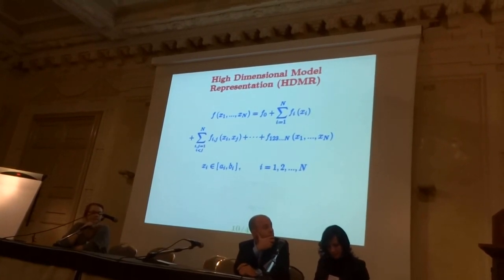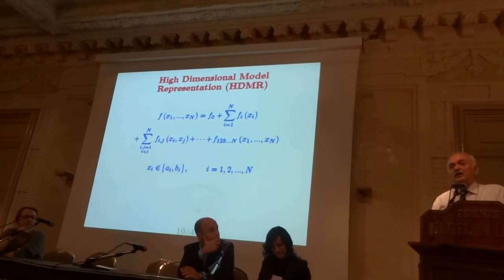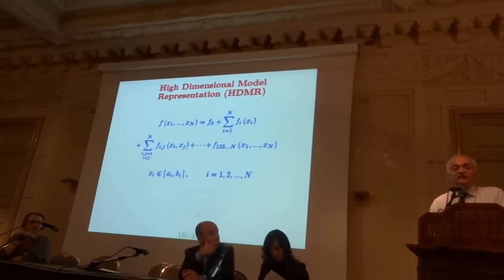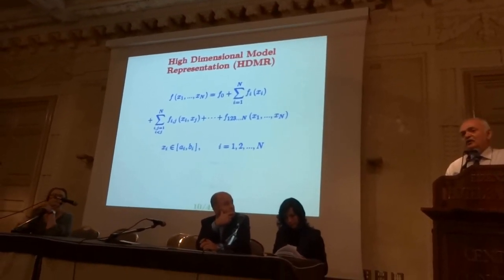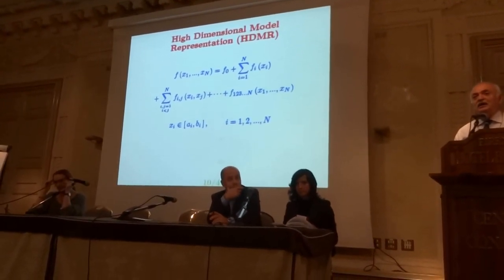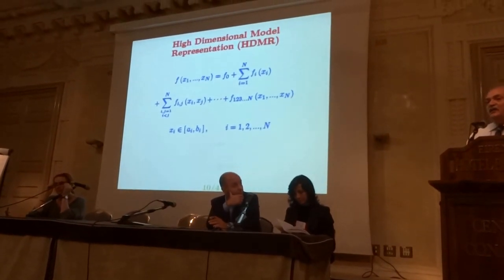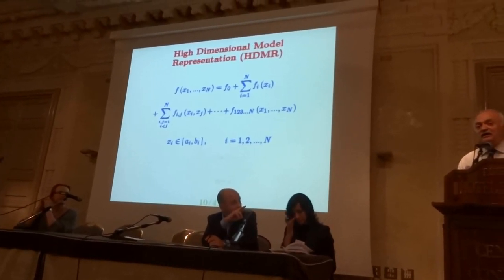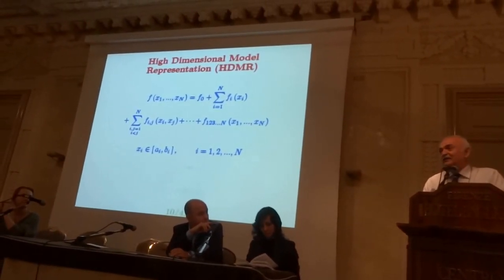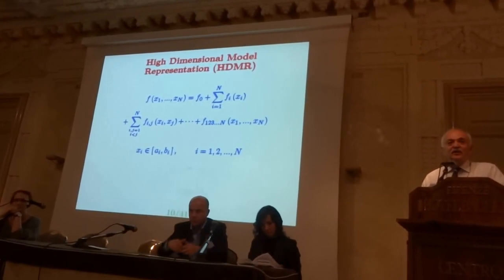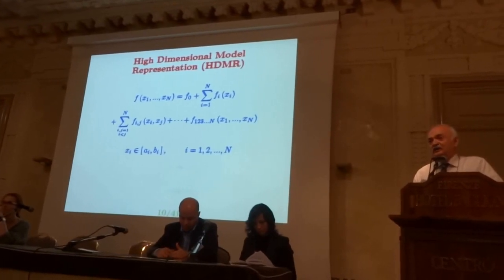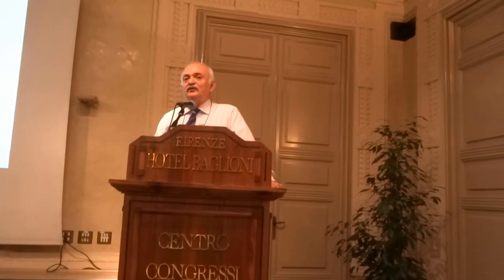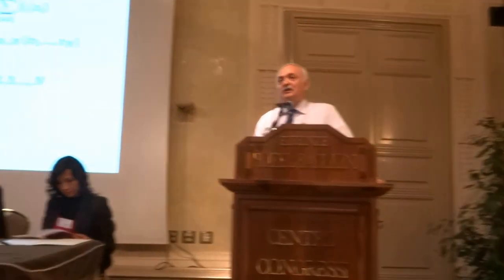This is called the High-Dimensional Model Representation, or HDMR. It is the decomposition of a multivariate function into terms with an ascending number of variables: you start with a constant, then univariate components, then bivariate functions, and so on. The expansion is a finite structure — not a series — but this finiteness may not be important in practice, because if the number of unknowns climbs to say hundreds, you will have a huge number of components. For this reason, the expansion is used by truncating at the constant level, the univariate level, or at most the bivariate level — used as an approximation scheme.